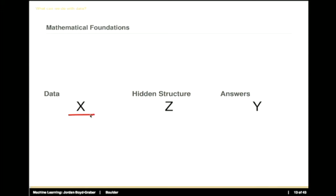x is the data itself. y is some sort of label, and we'll give examples of this in a second. And z is some sort of hidden structure.